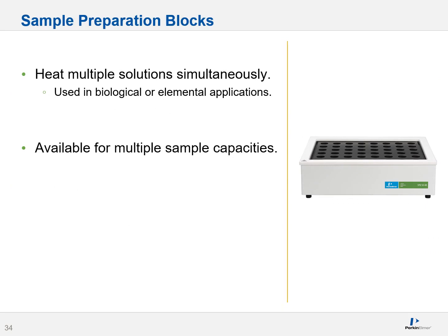You may also encounter sample preparation blocks. These are used to heat multiple solutions simultaneously and are used in biological or chemical elemental applications. Examples of use include catalyzing a protein reaction or digestion, or initiating a metals analysis digestion. They're available in multiple different capacities — you can store as few as six tubes or as many as 100, in many differing sizes.